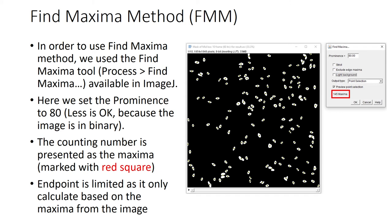For the Find Maxima Method, we use the Find Maxima tool in Process > Find Maxima. We use the mask, navigate to Process > Find Maxima, and set the prominence to 80. A lower value is acceptable since the image is binary with no contrast difference. Uncheck 'Light Background' and set the output type to 'Point Selection.' In this example, it shows 145 maxima, equal to the number of detected cells. However, this method has a limitation: it only calculates based on maxima and does not calculate the area of cells.